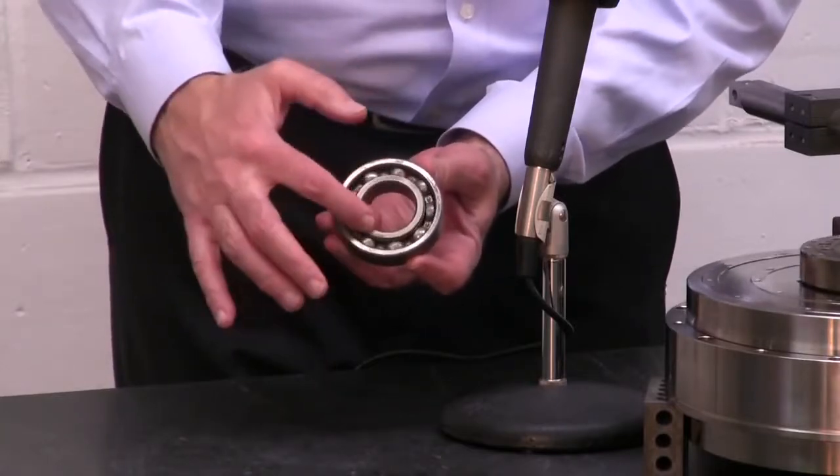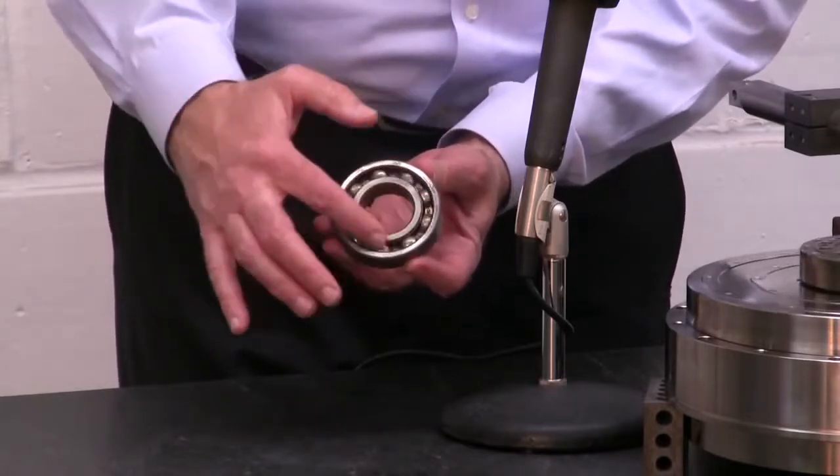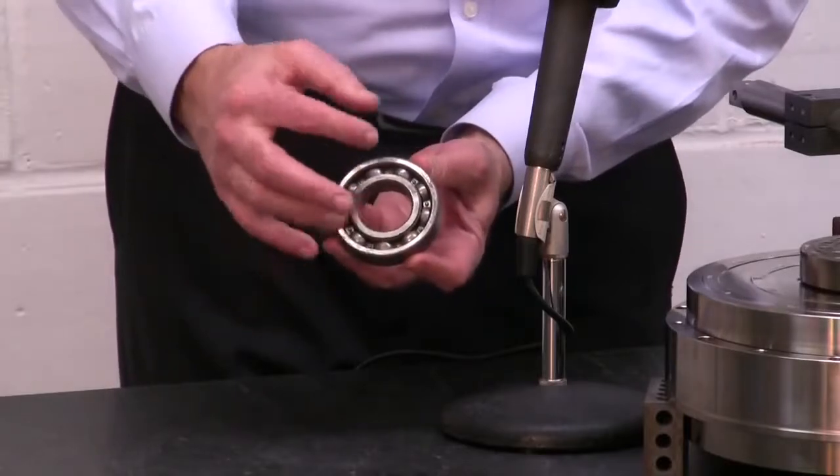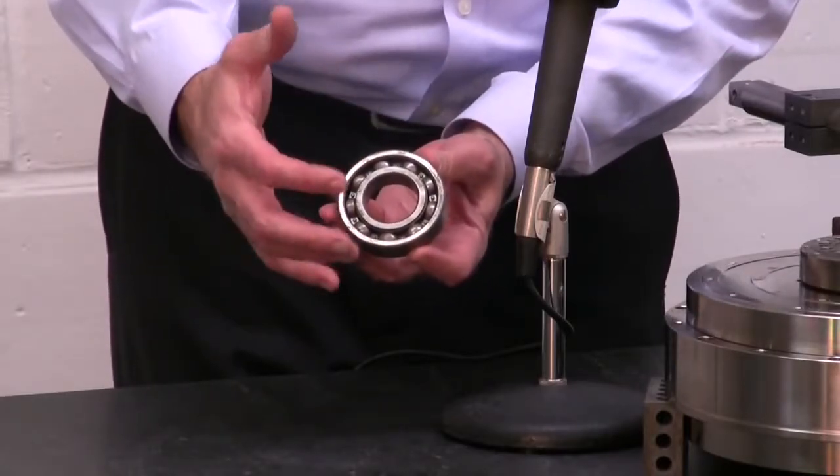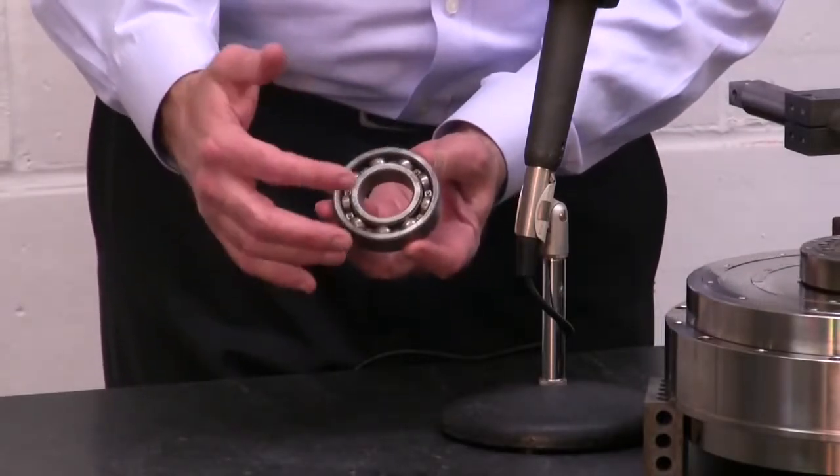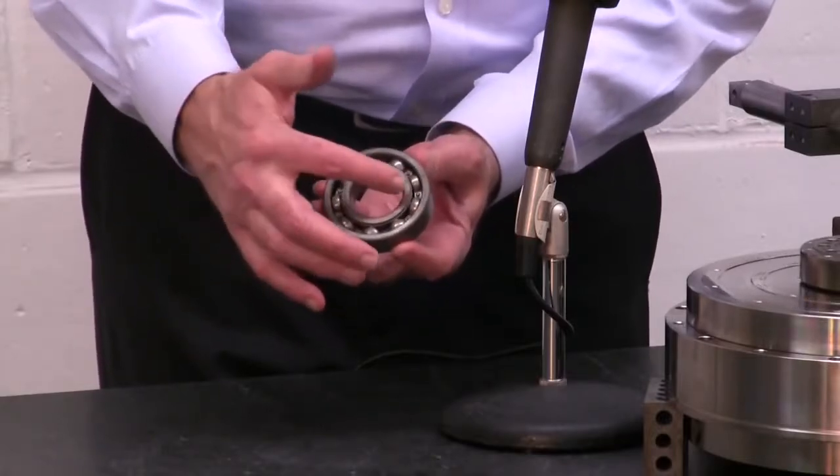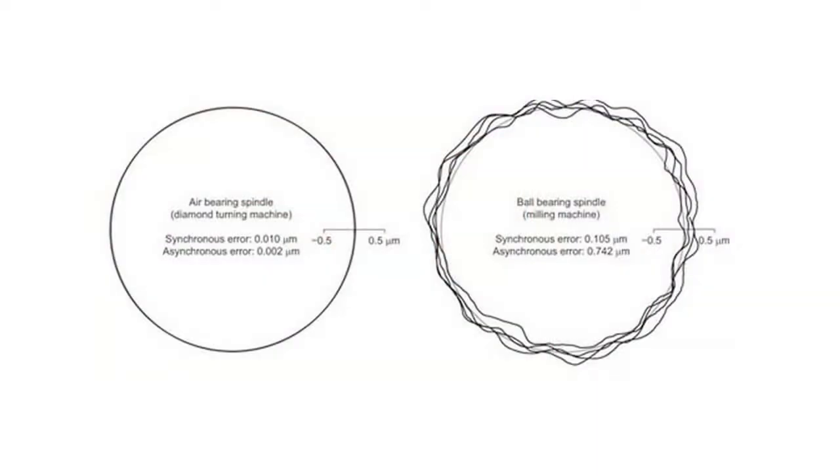The inner race is going to precess at a different speed than the balls. Because of this, all the little errors look like they're random. They're actually deterministic, but they result in what looks like a cloud around the rotation because of what appears to be random errors.